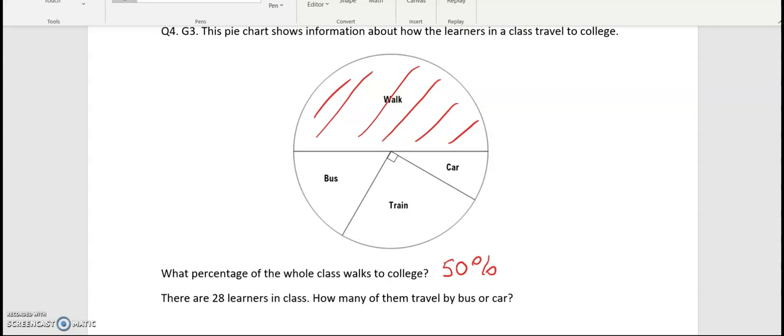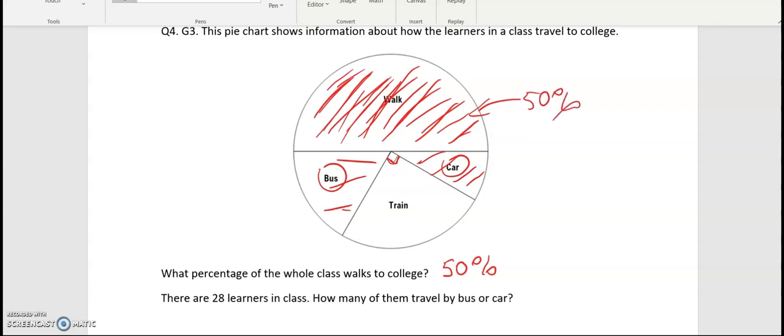There are 28 learners in class. So in total that is 28 learners. How many of them travel by bus or car? So bus or car both together. This is 25% because this is the right angle. So it's a quarter and then we have the half already. So this is 50%, this is 25%. So these two combined, bus and car, will be 25% so a quarter. So in other words we're looking at finding a quarter of 28, which is 7.